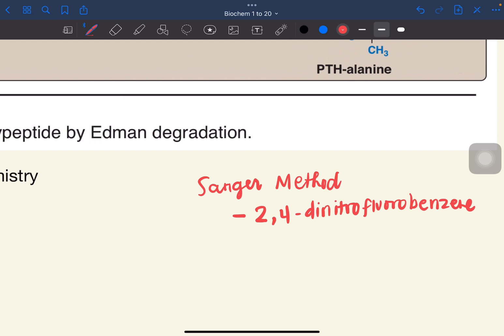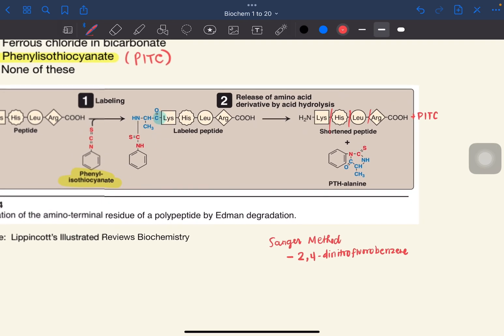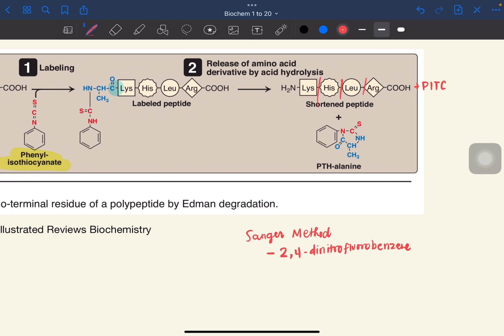This reacts with the N-terminal amino acid just like in Edmond. The issue is that the rest of the peptide is hydrolyzed. That's the disadvantage of the Sanger method. Only the N-terminal is identified. The rest are hydrolyzed.